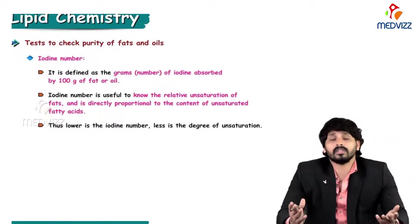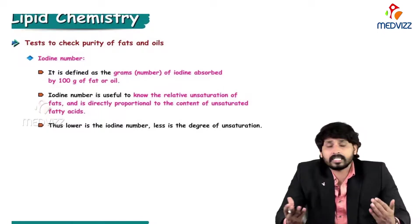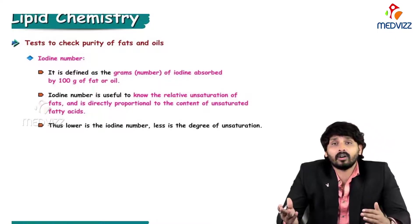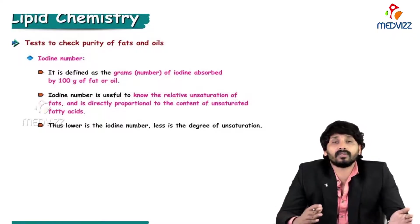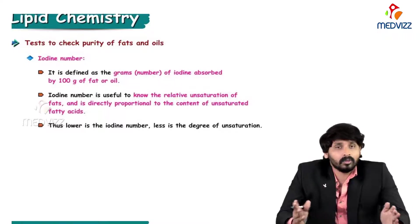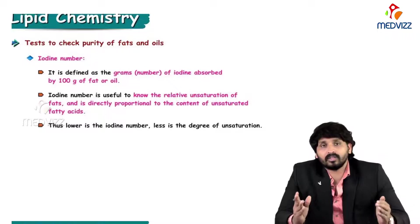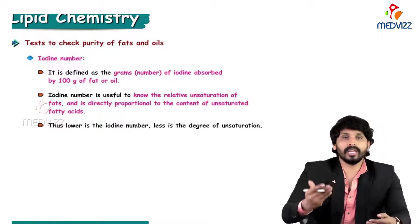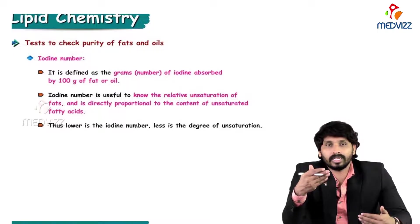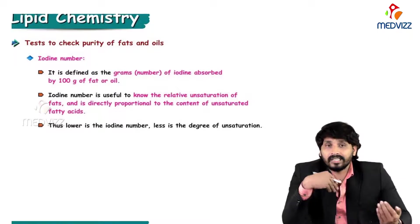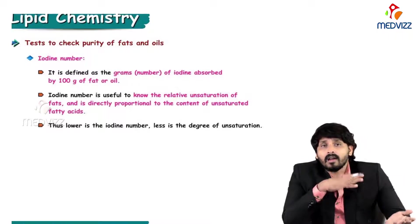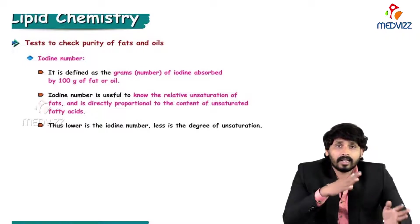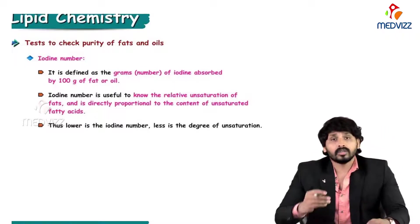Tests to check purity of fats and oils: vigilance departments catch operations adulterating natural oils with animal oils made from animal bones. To check whether the oil or fat being consumed is pure, there are several tests. The first is the iodine number, defined as the number of grams of iodine absorbed by 100 grams of fat or oil.